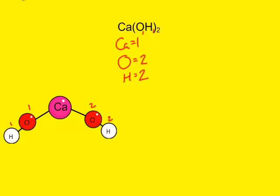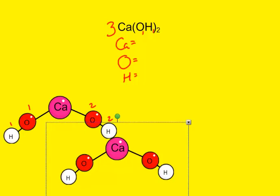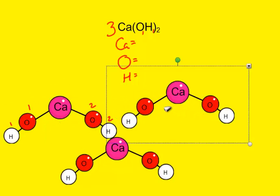If we were to put a coefficient in the front, let's say three, now that would change our numbers. So we would have to get rid of those, and it would be just like bringing in three of these molecules.